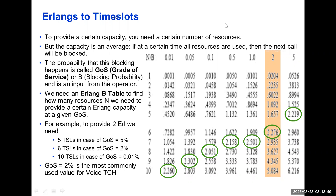Good day to all. Today we will discuss how to convert the physical time slot in a mobile network into Erlangs, to provide certain capacity in the network. We need certain physical resources. In the GSM network, the physical resource is the physical time slot, or we can say carrier. In one carrier, eight physical time slots are there.